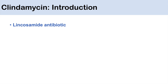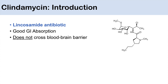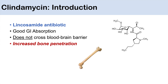Clindamycin is in the class of lincosamide antibiotics. Here is an image of clindamycin. As you can see, it has a pyrrolidine ring in its structure. Clindamycin has good GI absorption, so we can give it PO, but it's a bit hard on the GI tract. It does not cross the blood-brain barrier, but has very good — in fact, increased — bone penetration, which will become important when we decide what to use clindamycin for.